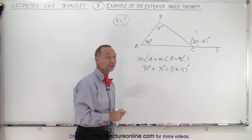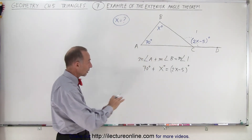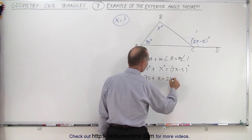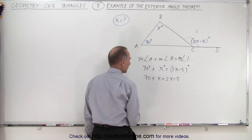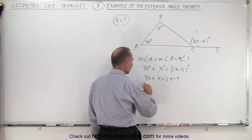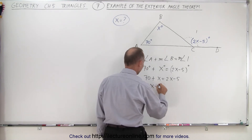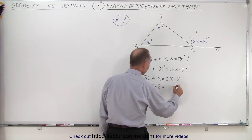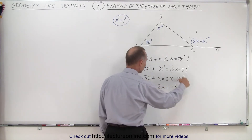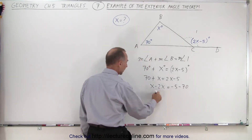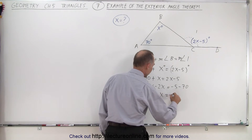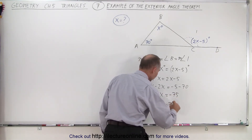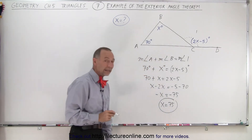Now we have to solve for x. We can write this as 70 plus x equals 2x minus 5. Moving all x's to one side and numbers to the other: x minus 2x equals minus 5 minus 70, giving minus x equals minus 75. Multiplying both sides by negative 1, x equals 75.